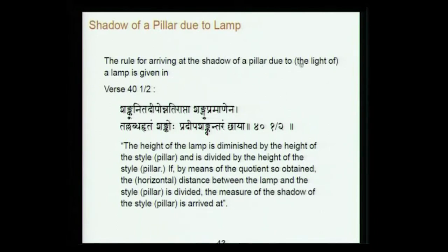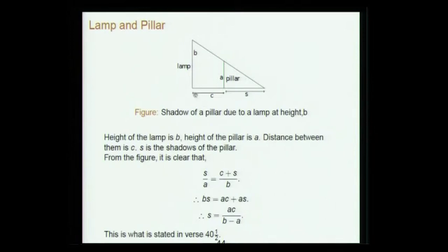The rule for the shadow of a pillar due to the light of a lamp: the height of the lamp diminished by the height of the pillar, divided by the height of the pillar — and by means of this quotient the horizontal distance between the lamp and the pillar is divided — gives the measure of the shadow. Essentially, if b is the lamp height, a is the pillar height, and c is the distance, then S/a = (c + S)/b, giving shadow S = ac/(b − a).